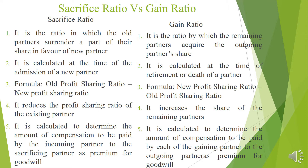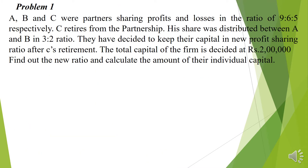The fifth and last point: sacrifice ratio is calculated to determine the amount of compensation to be paid by the incoming partner to the sacrificing partners as premium for goodwill. Whereas gain ratio is calculated to determine the amount of compensation to be paid by each of the gaining partners to the outgoing partner as premium for goodwill. These are the differences between sacrifice ratio and gain ratio.